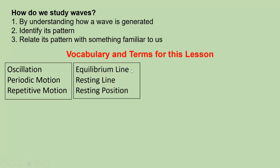Likewise, equilibrium line, resting line, resting position, they are all synonyms. Complete cycle, wavelength is represented by a Greek letter lambda, they all have the same meaning.